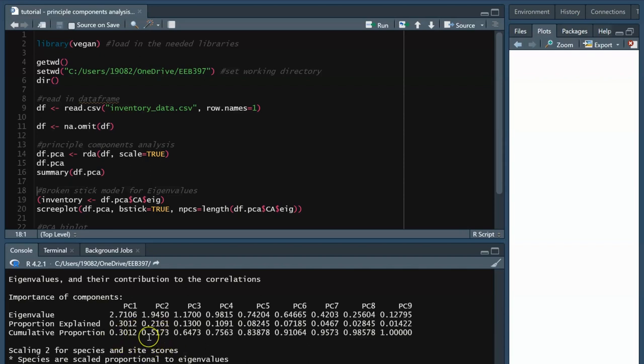Below, we can look at our cumulative proportion explained, which tells us that our first two principal components explain a total of 51.73% of variation in the data. This is important because the higher the variance explained, the more reliable the trends you can pick out from the biplot. In the summary section, you can also see the species scores and site scores that contribute to making the biplot itself.